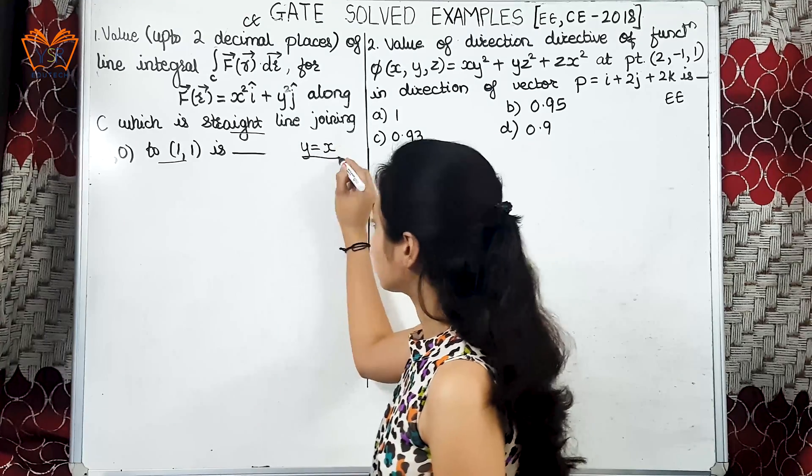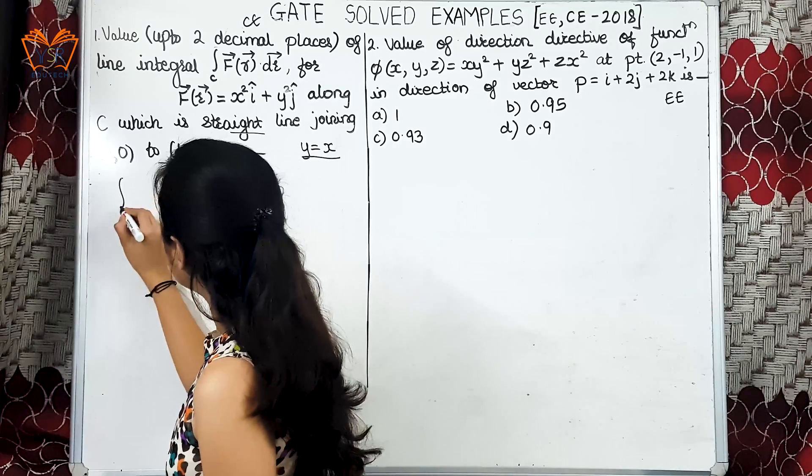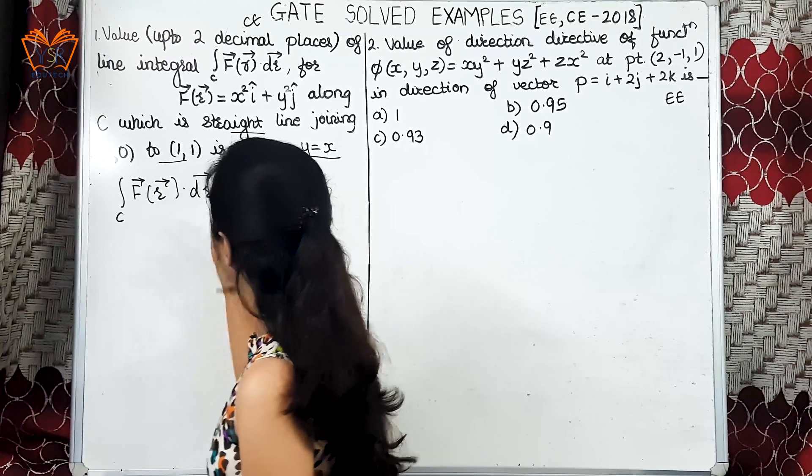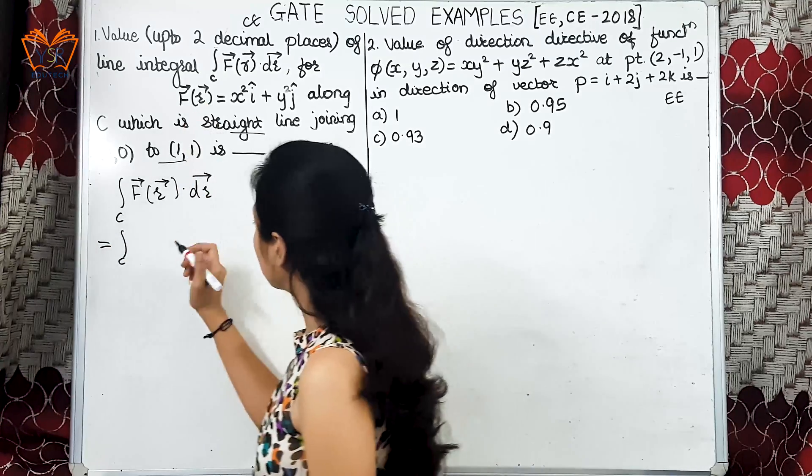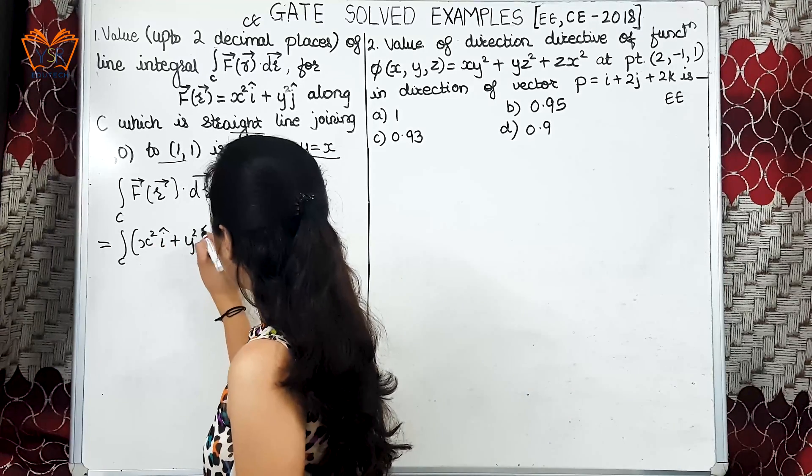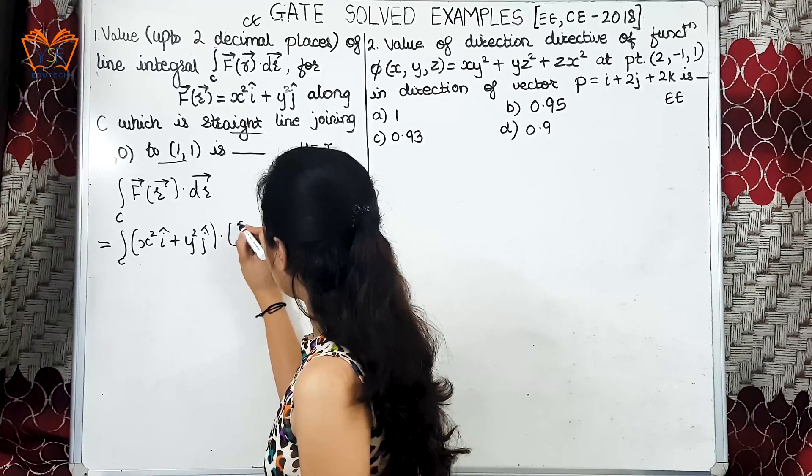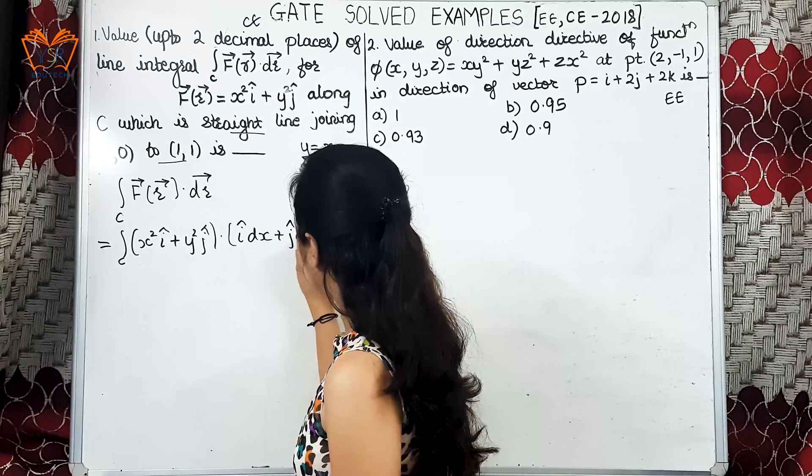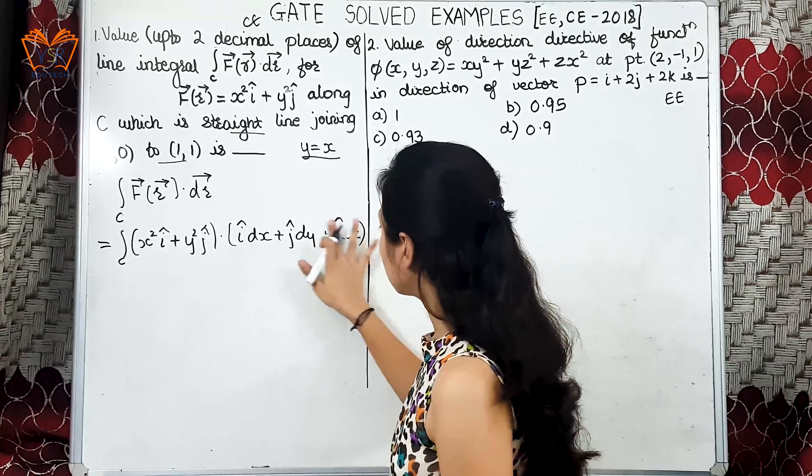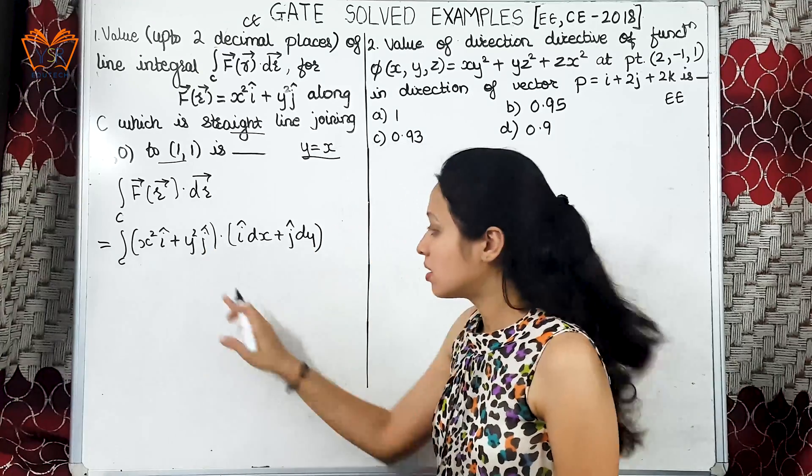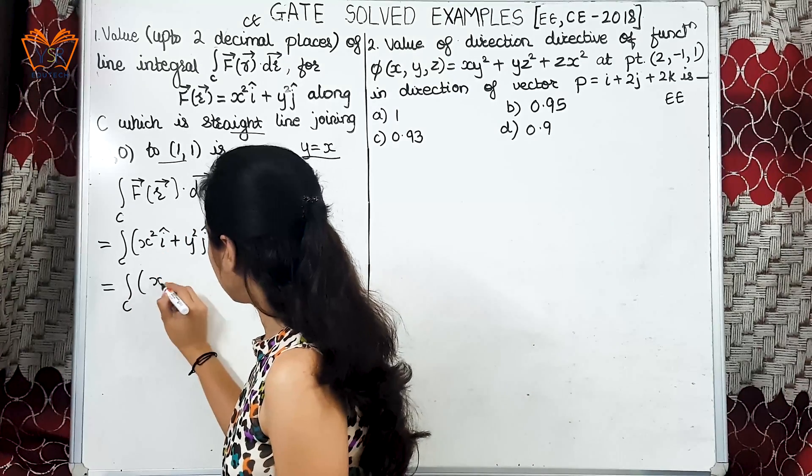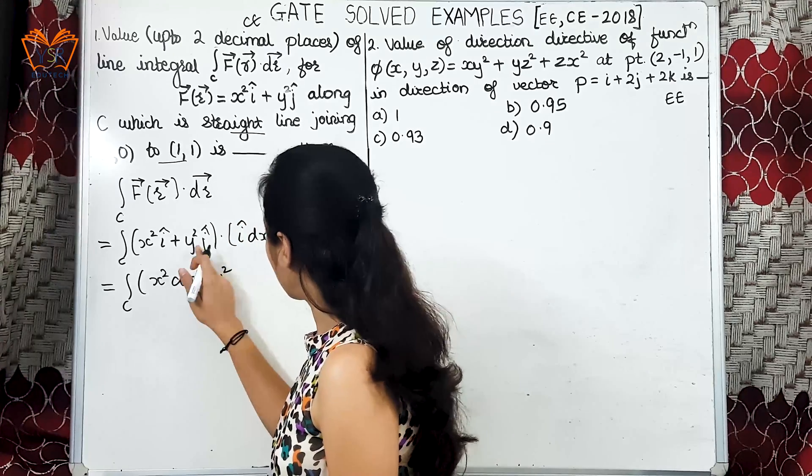Now what we are asking is integration over curve C, f of r vector dot dr. So if we substitute the values we get x square i cap plus y square j cap. And we know what is dr: dr is i cap dx plus j cap dy plus k cap dz. But we'll eliminate this third term as there is no k term present here. Now we'll go for the dot product. We get x square dx plus y square dy.